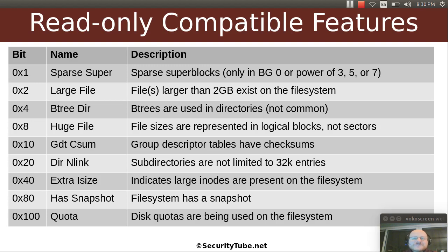The large file feature allows you to have files larger than two gigabytes. If this is set, then you have such a file — at least one — on your file system. B-tree dir tells you that B-trees are used in directories; this is not very common today. The huge file feature allows you to have file sizes represented in logical blocks, not in sectors, allowing you to store very large files — even larger than large.